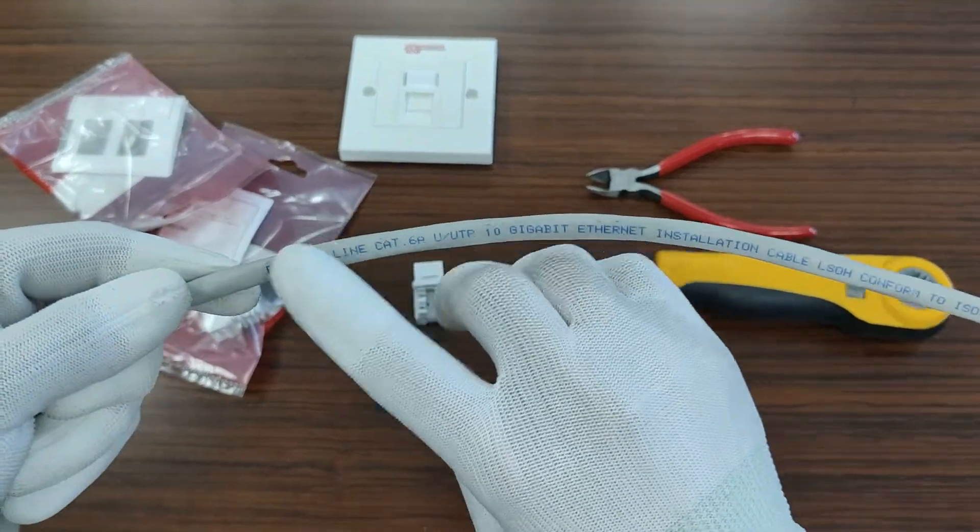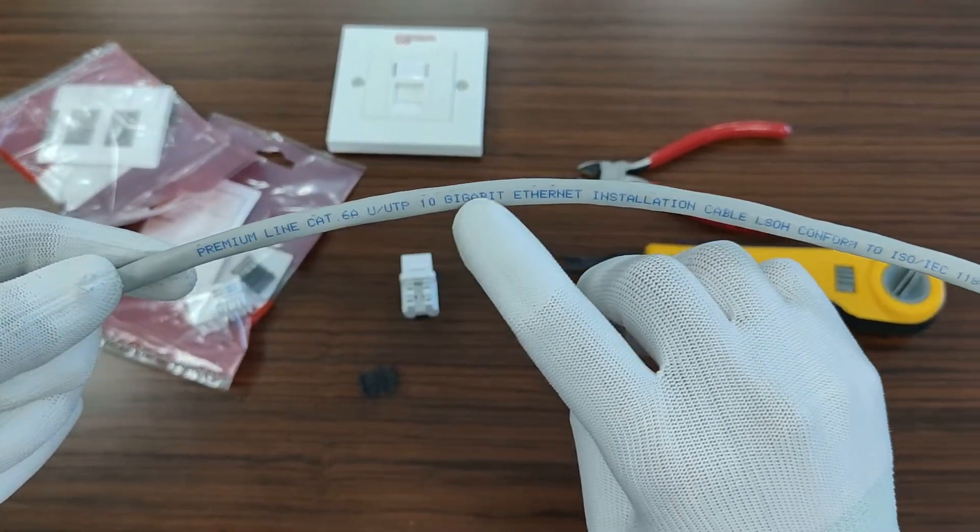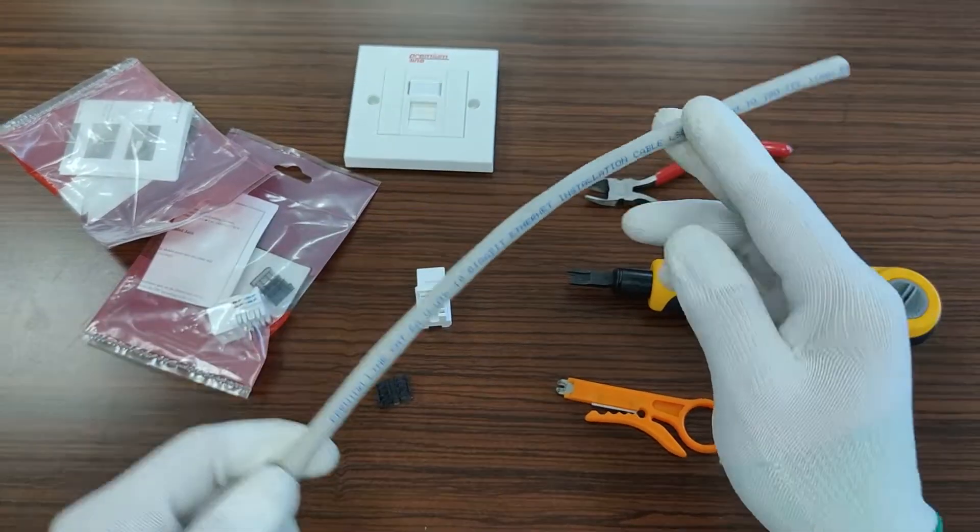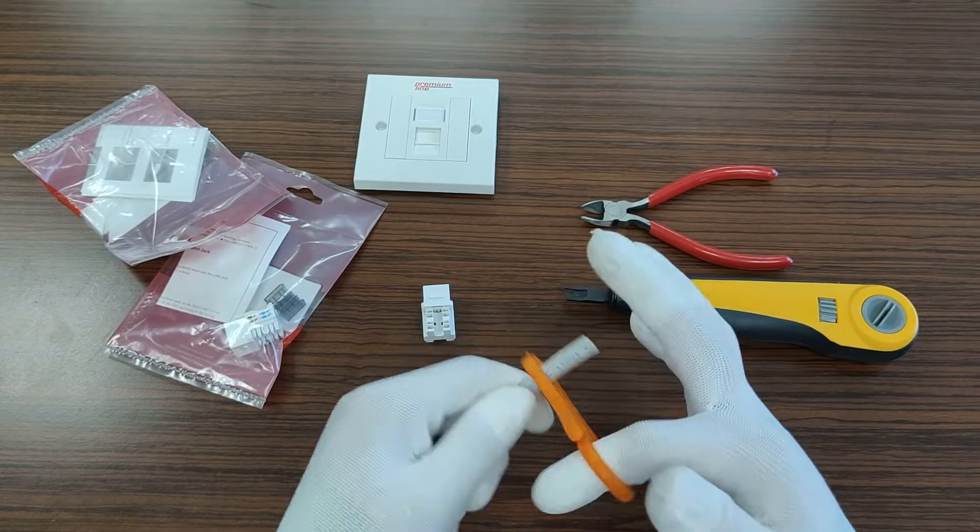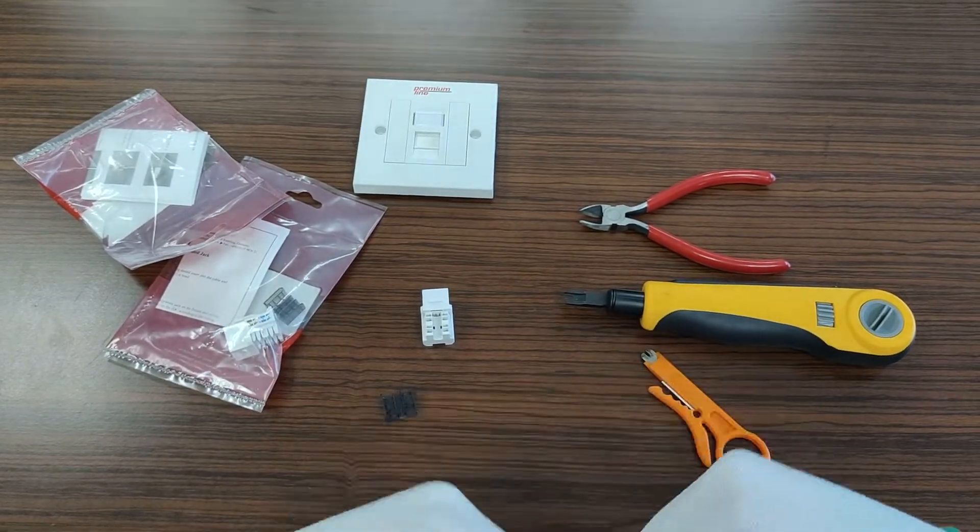For installation, we use the premium line cable of Category 6a. The first step is stripping off one inch or 2.5 centimeters of jacket from the end. We remove the insulation.